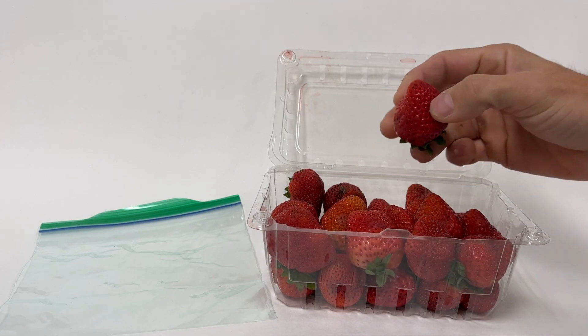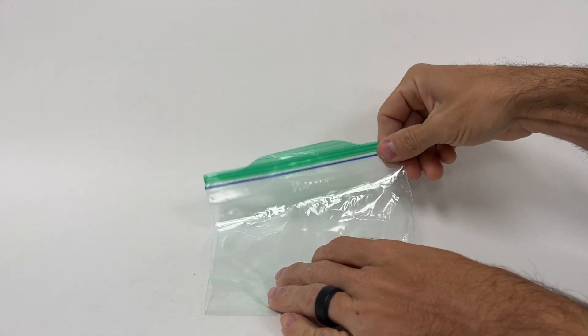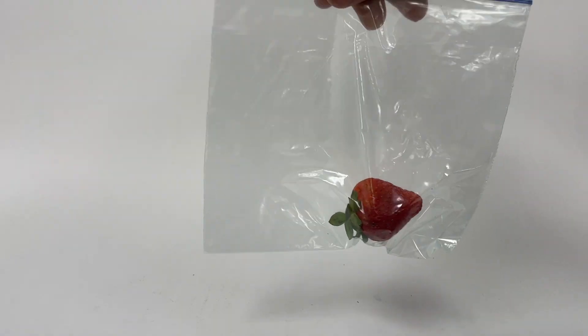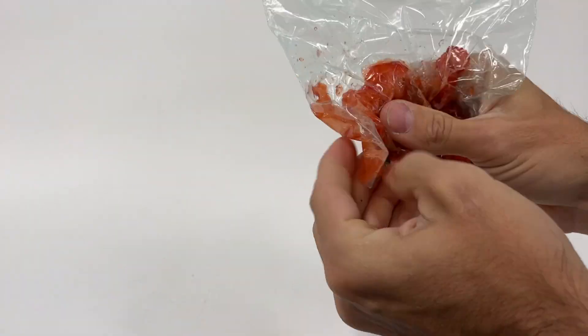After that, get a strawberry, place it in your ziplock bag, and try to get as much air out as possible before closing it. Then carefully mash up the strawberry for about a minute.